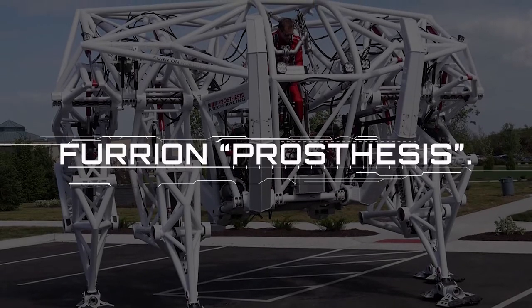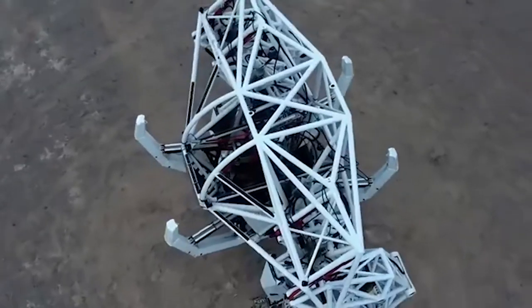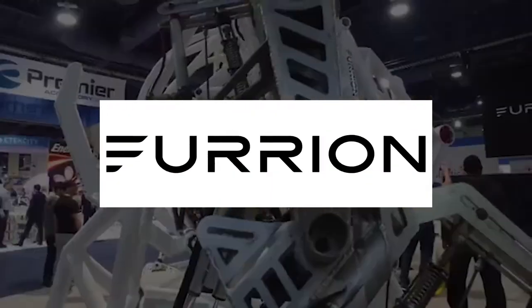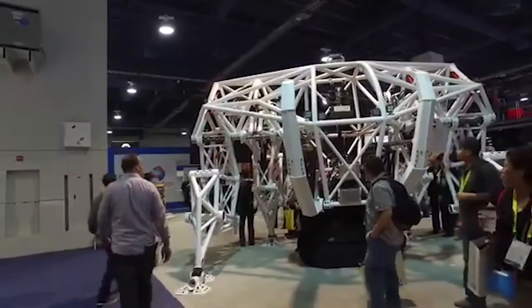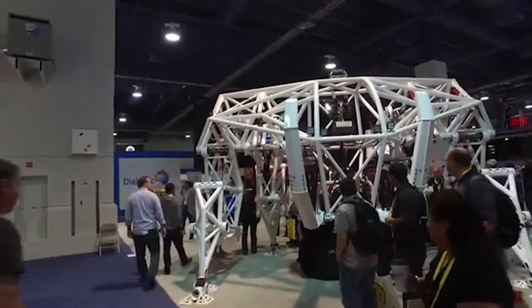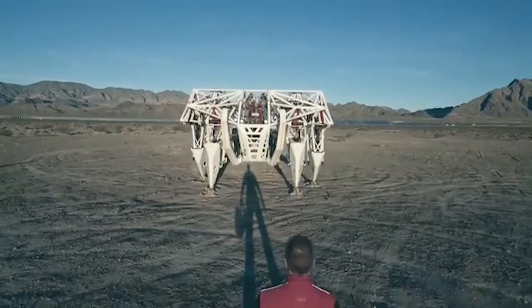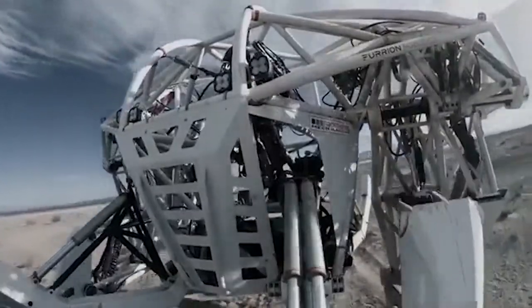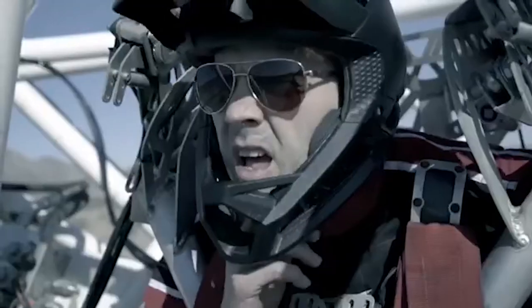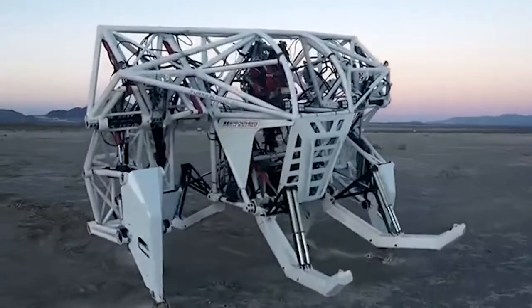Furion Prosthesis. Mech racing isn't the sport of the future anymore. It's the sport of the present. A company called Furion brought its first exobionic racing mech called Prosthesis to CES in 2018. Prosthesis is 15 feet tall and weighs over 8,000 pounds. It's technically an exoskeleton, meaning it doesn't operate automatically, as it's completely controlled by a human operator. In layman's words, it's a giant mechanical racing spider.